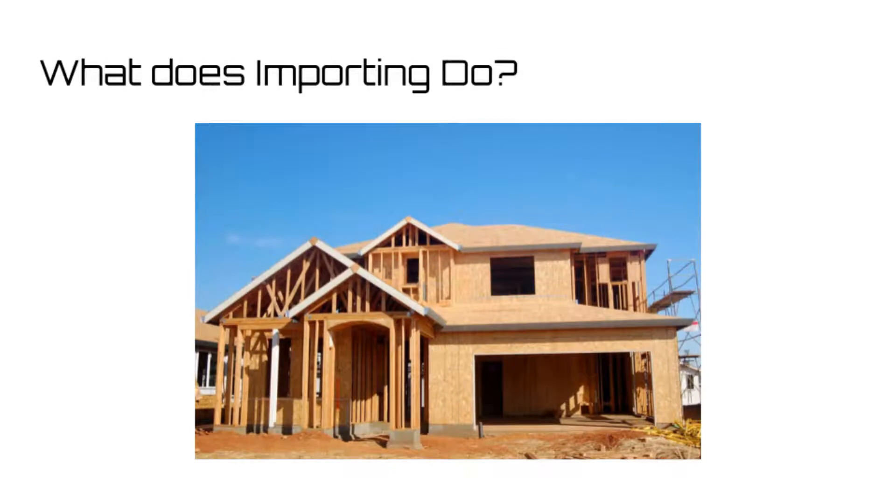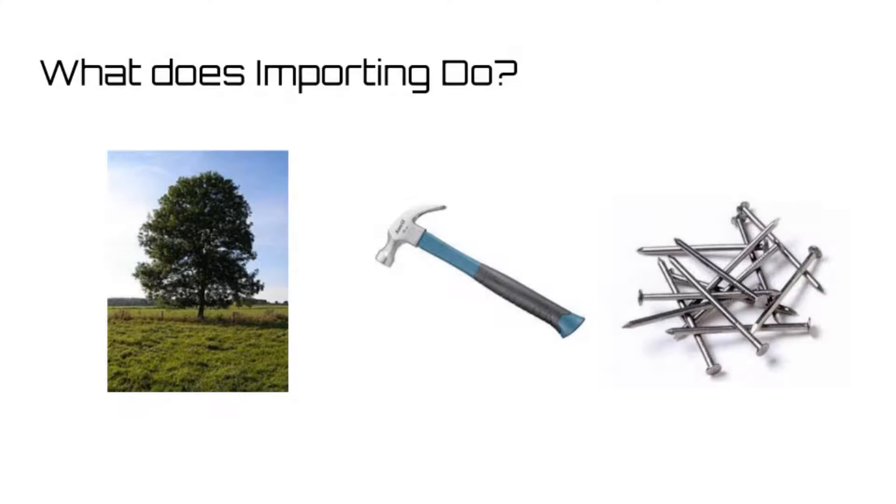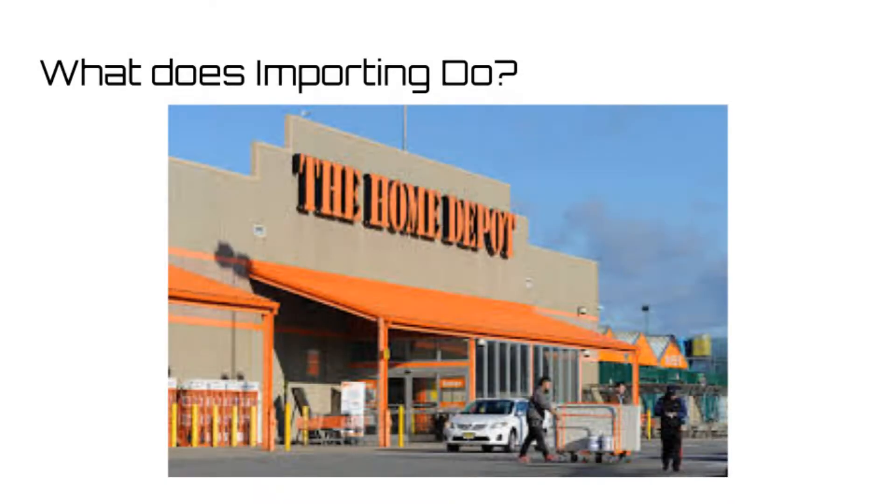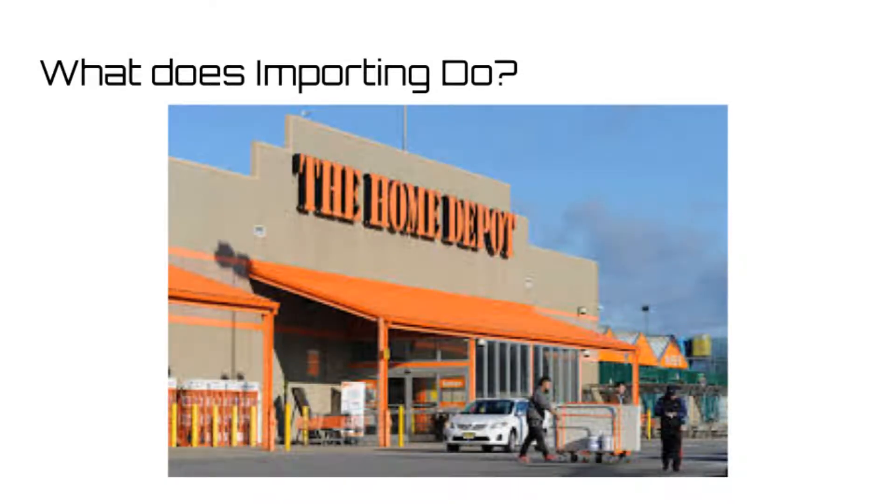Imagine you are trying to build a house. Sure, you could grow your own trees, chop down your own wood, make your own tools and nails, and build it up from scratch. But why do that when you can buy these materials that others have already made ready for you?